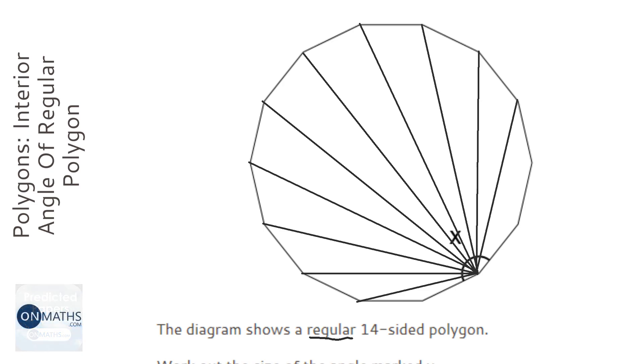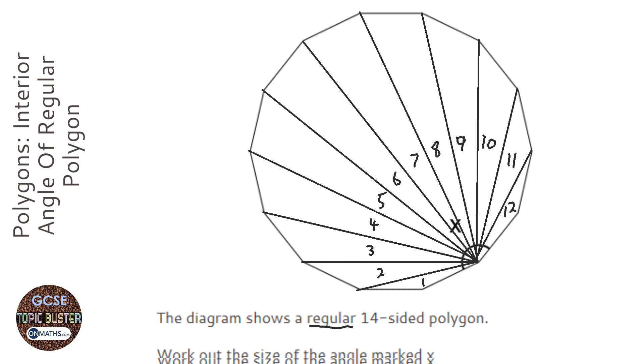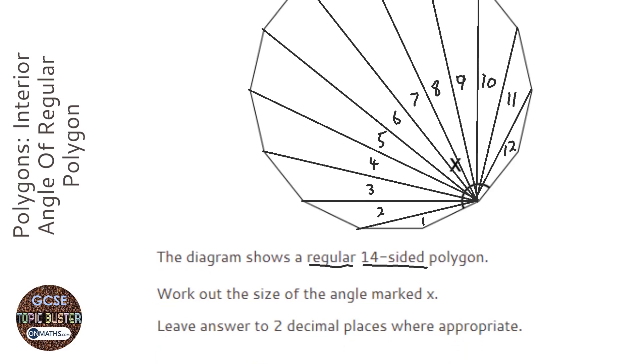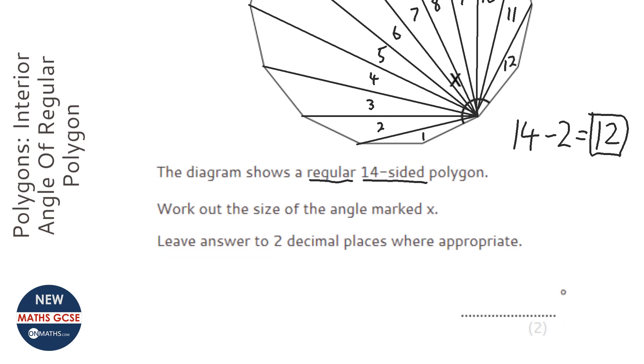Now each of these triangles is going to add up to 180, so it's one, two, three, four, five, six, seven, eight, nine, ten, eleven, twelve triangles. Notice there's 14 sides, and actually a quicker way of doing this is just taking away two, and that shows you how many triangles there are.